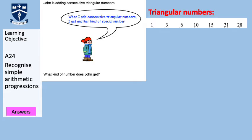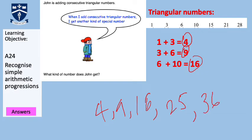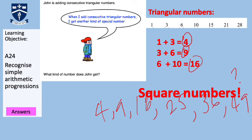I have put the first seven triangle numbers on the board. Let's look at adding pairs of consecutive triangle numbers: 1+3=4, 3+6=9, 6+10=16, 10+15=25, 15+21=36, 21+28=49. What do you notice about each of these answers? We notice that they are all square numbers. So when we add any two consecutive triangular numbers, we get square numbers.